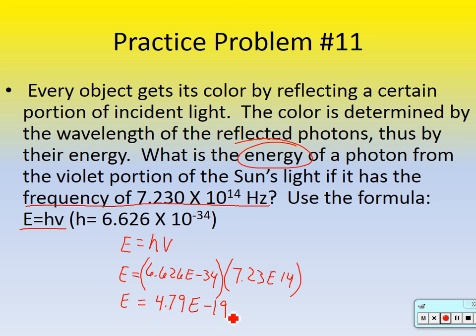When you get an answer, the units for energy are joules — abbreviate as capital J. The answer is 4.79 times 10 to the minus 19th joules. This is a very small number — there's not very much energy in one photon of light. That makes sense.